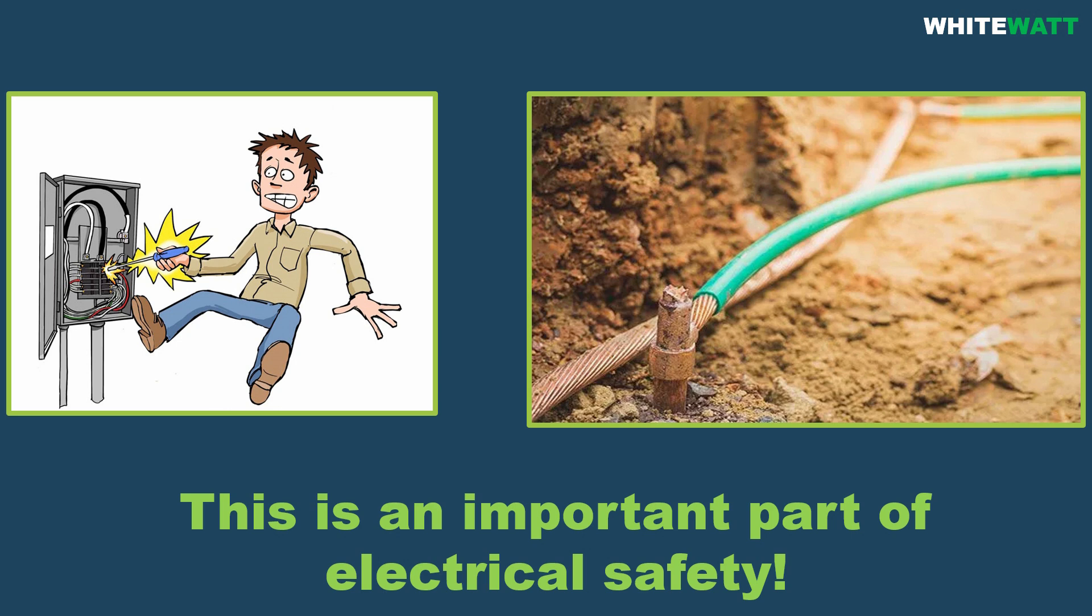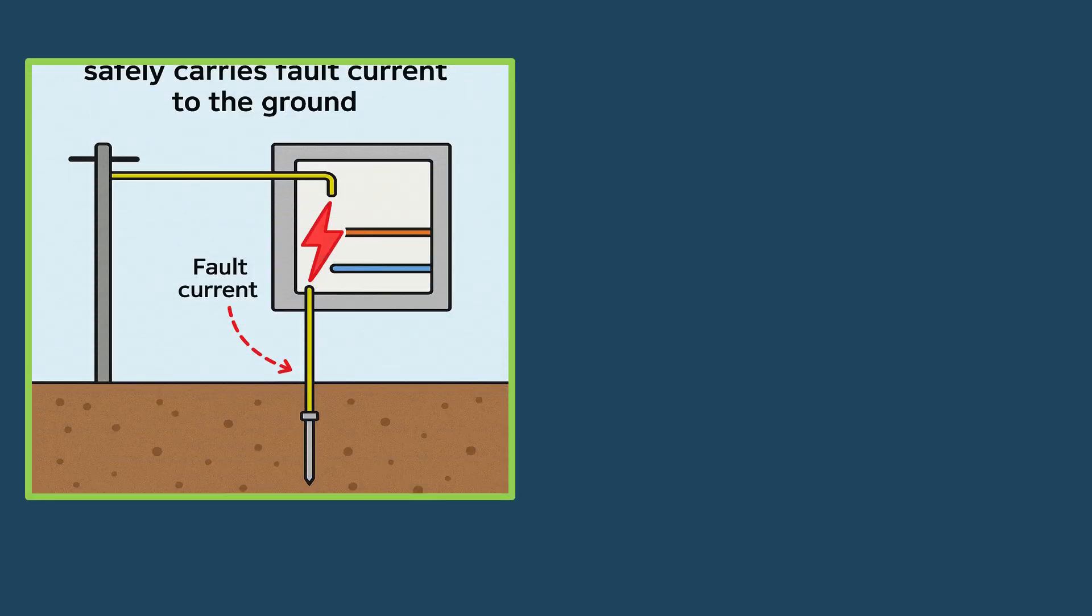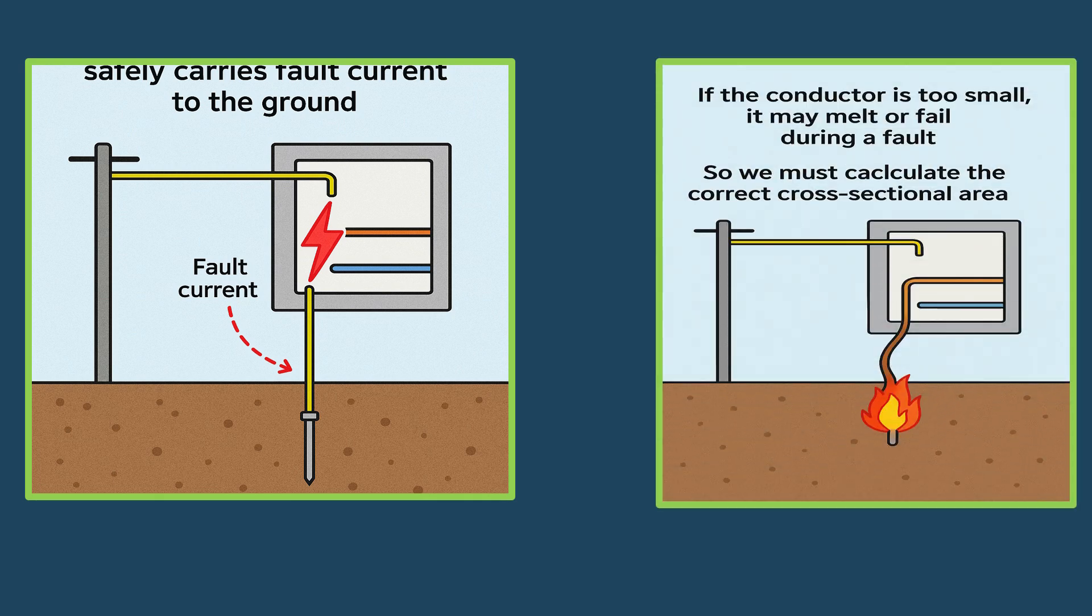Step one: Know why earthing conductor size matters. Earthing or grounding safely carries fault current to the ground. If the conductor is too small, it may melt or fail during a fault, so we must calculate the correct cross-sectional area.